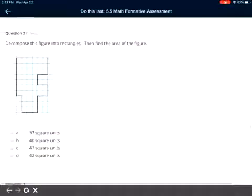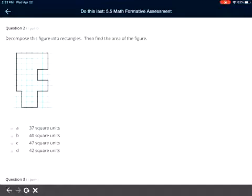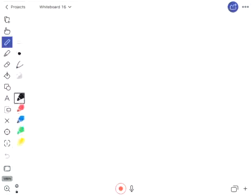Number two: decompose this figure into rectangles, then find the area of the figure. This is where you can imagine and figure out where those lines would be, and then figure out what's the area for this. Just remember how to figure out area. I'm going to go to this screen here to review area - I'm going to be giving it away a little bit.